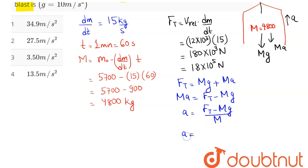Now, we have thrust force value as 1.8 into 10 power 5 minus mass of the rocket is 4800 and g value is 10 divided by 4800.